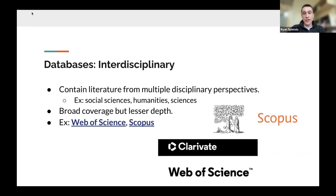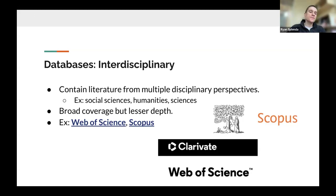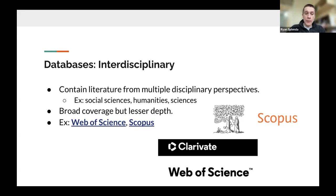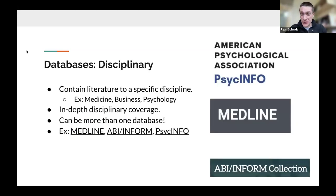Interdisciplinary databases contain literature from multiple disciplinary perspectives — for example, covering all social sciences, humanities, or sciences. They have very broad coverage but are not necessarily as in-depth as disciplinary-specific databases. Good examples are Scopus from Elsevier and Web of Science from Clarivate — these are two of the major interdisciplinary databases, and we encourage searching these alongside disciplinary databases.